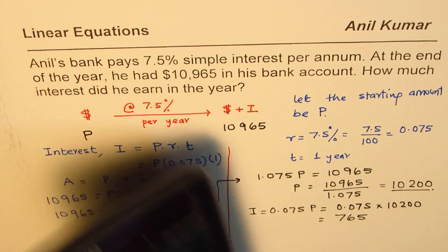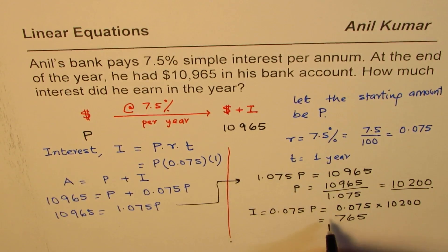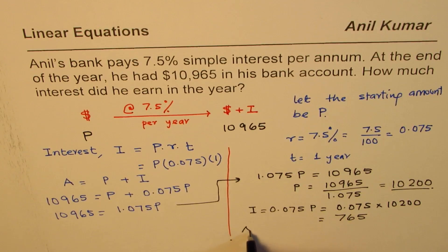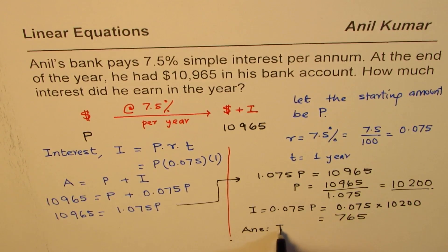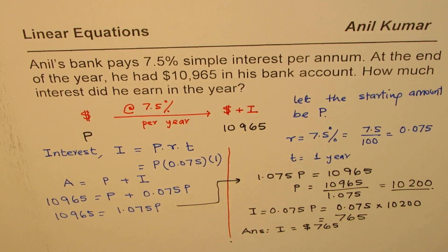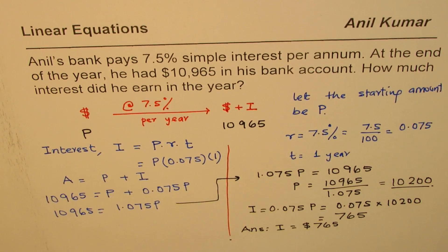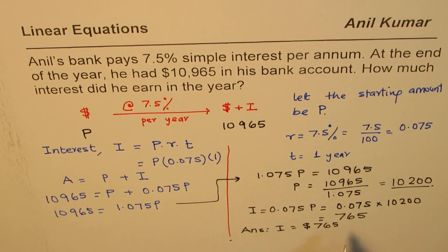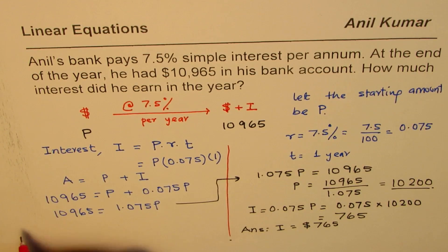Do you see that? So, we have interest of $765. So, we can write on the answer that the interest earned is $765. Now, the question also should be is it the right answer? So, let's kind of check the answer. We will check it here.